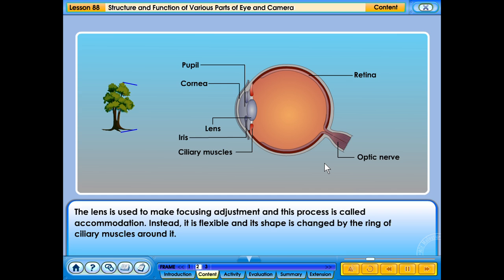The lens is used to make focusing adjustment and this process is called accommodation. Instead, it is flexible and its shape is changed by the ring of ciliary muscles around it.